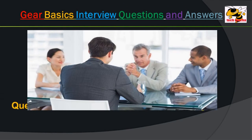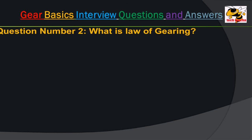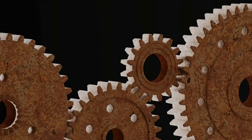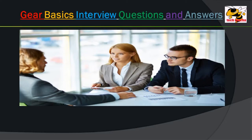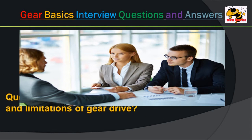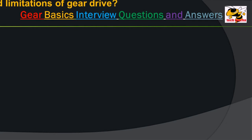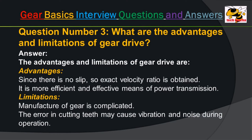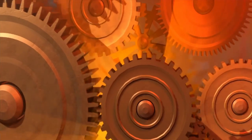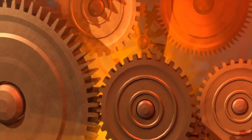Question number 2: What is the law of gearing? Answer: The law of gearing states that for obtaining a constant velocity ratio at any instant of teeth, the common normal at each point of contact should always pass through a pitch point situated on the line joining the centers of rotation of the pair of meshing gears. Question number 3: What are the advantages and limitations of gear drive? Answer: Advantages — since there is no slip, an exact velocity ratio is obtained; it is a more efficient and effective means of power transmission.